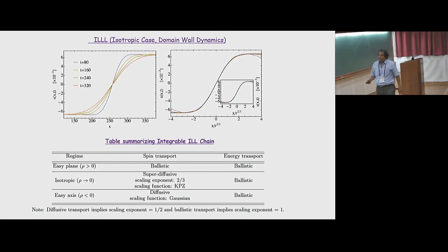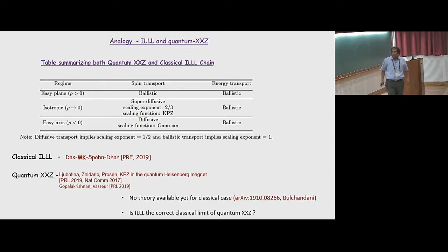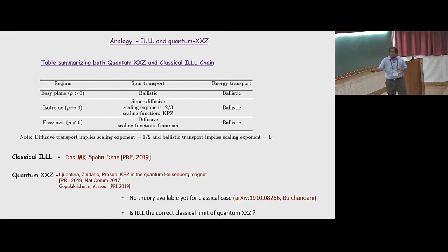Comparing the table of the integrable lattice Landau-Lifshitz model with the quantum XXZ spin chain — they share the same table in every regime. There is no theoretical understanding yet for the classical case — Veer Bulchandani will say something about that. This suggests that the correct classical limit of the quantum XXZ could be this integrable lattice Landau-Lifshitz model.